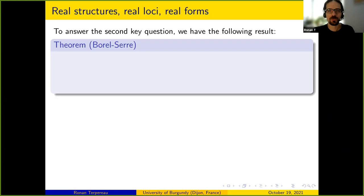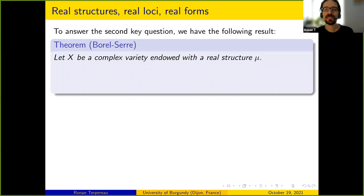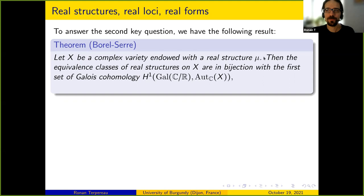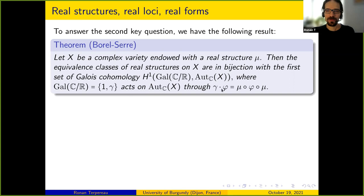Let X be a complex variety endowed with a real structure mu. Then the set of equivalence classes of real structures on X is in bijection with the first Galois cohomology set H^1(Γ, Aut(X)), where Γ = Z/2Z. The Galois group acts on Aut(X) by: if γ is the non-trivial element, then γ·φ = mu ∘ φ ∘ mu (conjugation by mu).